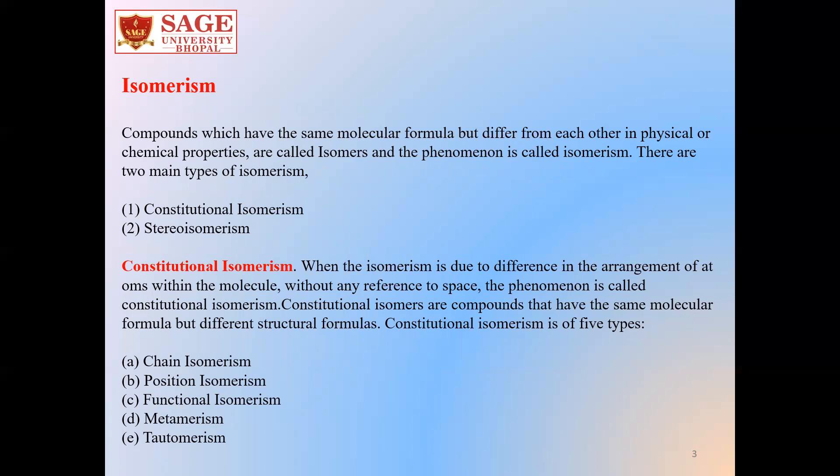Constitutional isomers can be of five types: chain isomerism, position isomerism, functional isomerism, metamerism, and tautomerism.